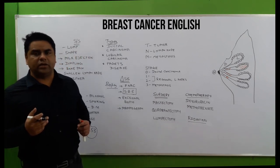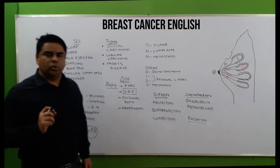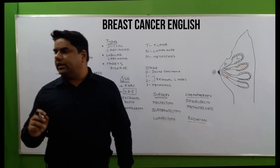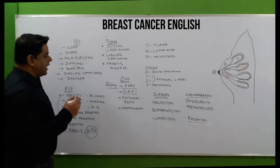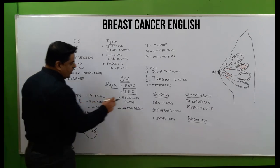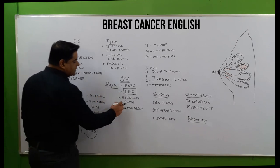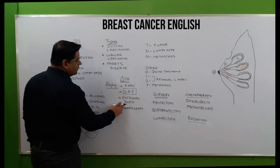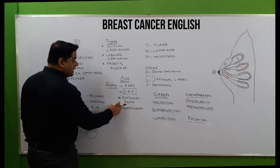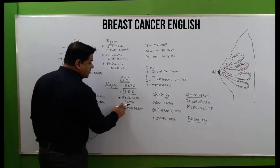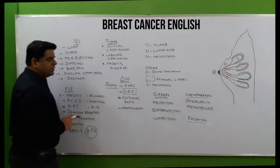Self breast examination assesses for any lump formation, dimpling, or firmness on a particular side of the breast. These things are taught to females, especially adolescents and school-going girls, for early assessment and screening of breast cancer. Excisional biopsy covers complete extraction of the tumor for morphological study and removal.